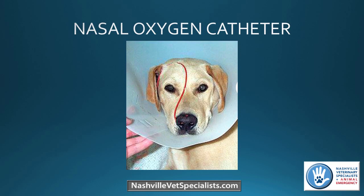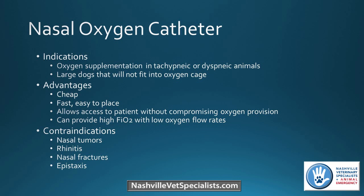Next is the nasal oxygen catheter. Here's a picture of a Labrador with one placed. This is a great way to supplement oxygen in tachypneic or dyspneic dogs — particularly large dogs who can't fit in an oxygen cage, or if you don't have oxygen cages. They're very cheap, quick, and easy to place. You can move around and examine the patient freely, whereas opening an oxygen cage door loses oxygen and makes examination harder. You can provide a pretty high fraction of inspired oxygen at a relatively low flow rate.